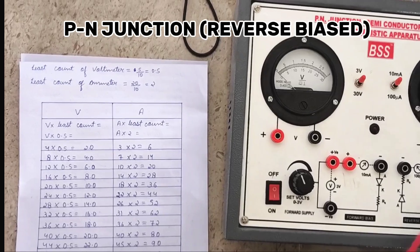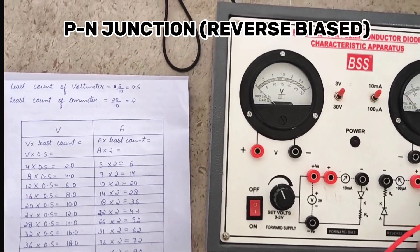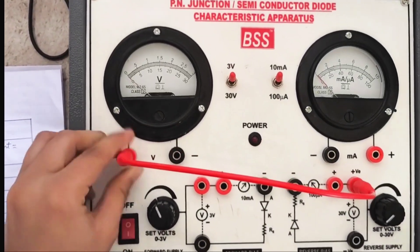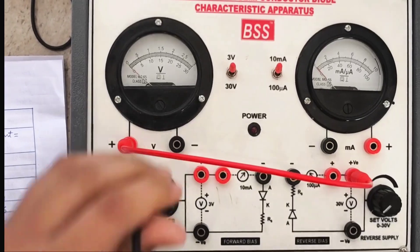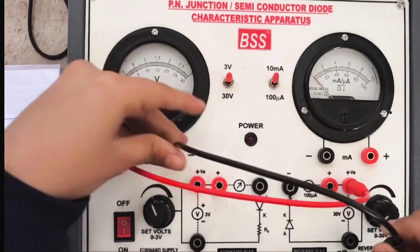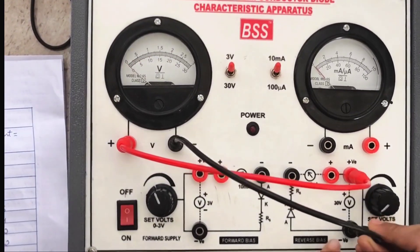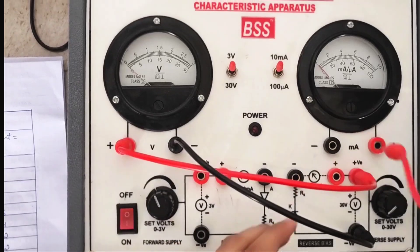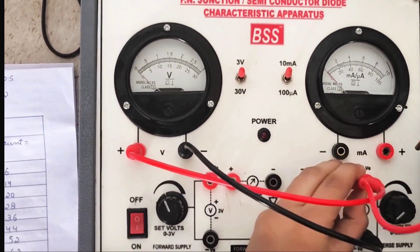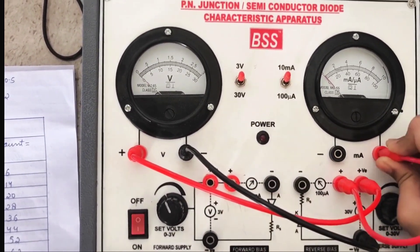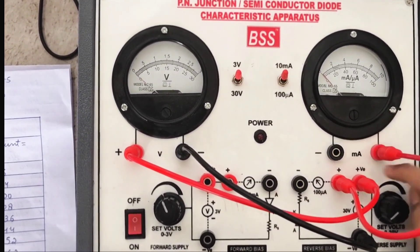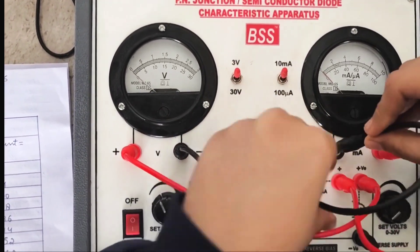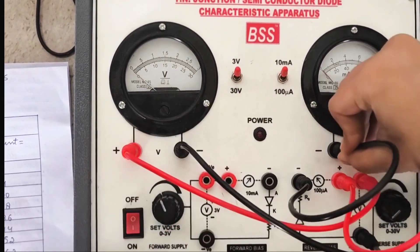First we have to connect the positive terminal of this circuit with the positive terminal of this voltmeter. Similarly, the negative terminal of this voltmeter to the negative terminal of this circuit. Next, we have to connect the positive terminal of this diode with the positive terminal of this milliammeter, and similarly the negative one with the negative one.